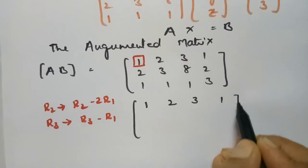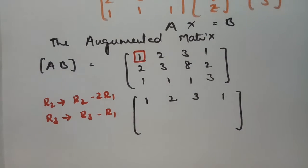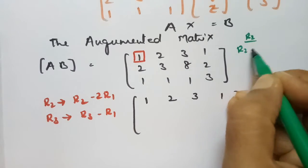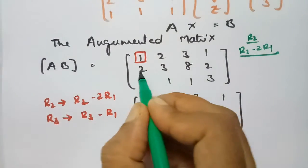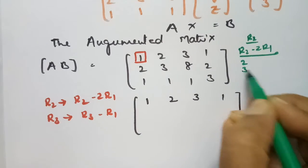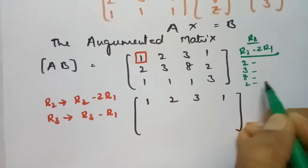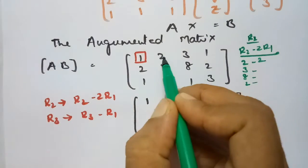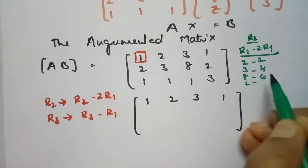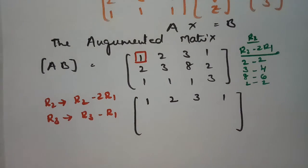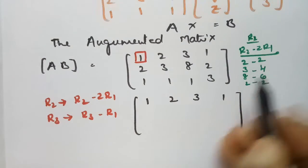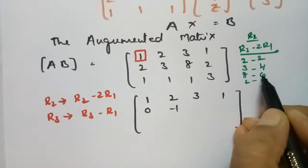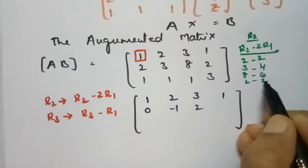Row 1 stays as 1, 2, 3, 1. For row 2, the operation is R2 minus 2R1. R2 is 2, 3, 8, 2 and we subtract 2 times R1, which is 2, 4, 6, 2. So the result is: 2 minus 2 = 0, 3 minus 4 = minus 1, 8 minus 6 = plus 2, and 2 minus 2 = 0.